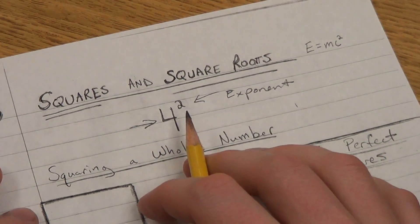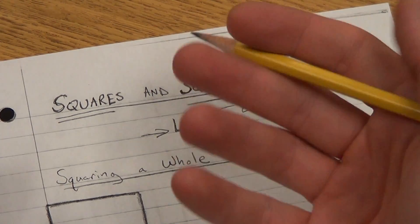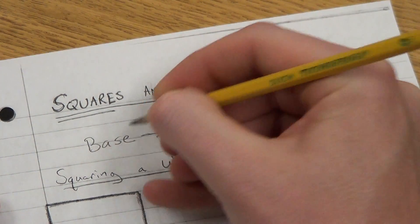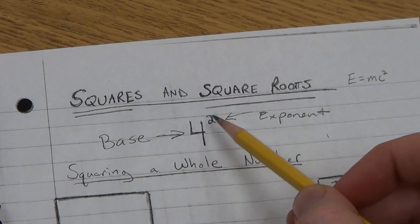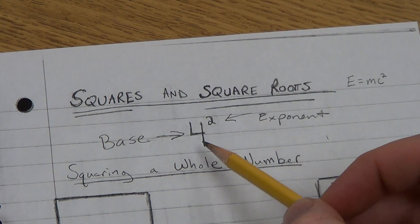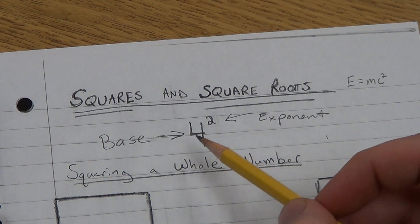This is the number 4 and on it is a smaller floating number we call an exponent. That's the exponent, the exponent is 2. And this exponent can be any number really, but when the exponent is 2 we refer to it as being squared. The 4, which is the bigger number, is called the base.